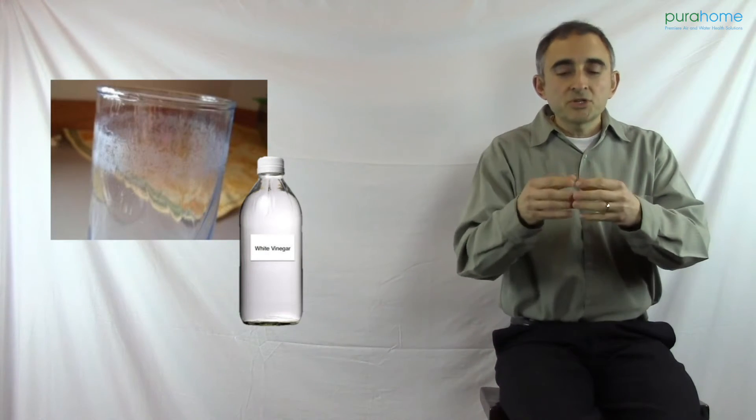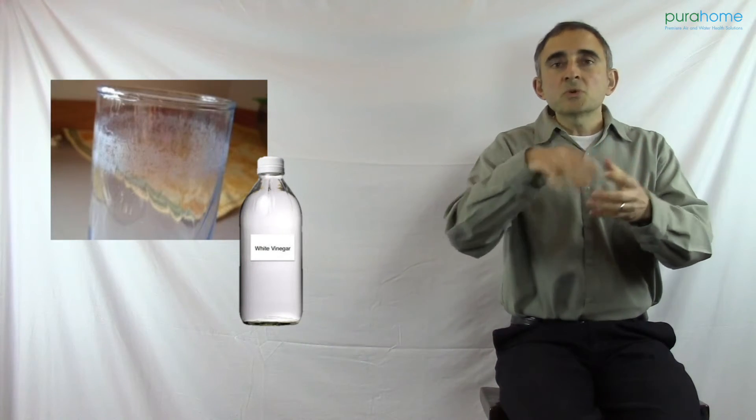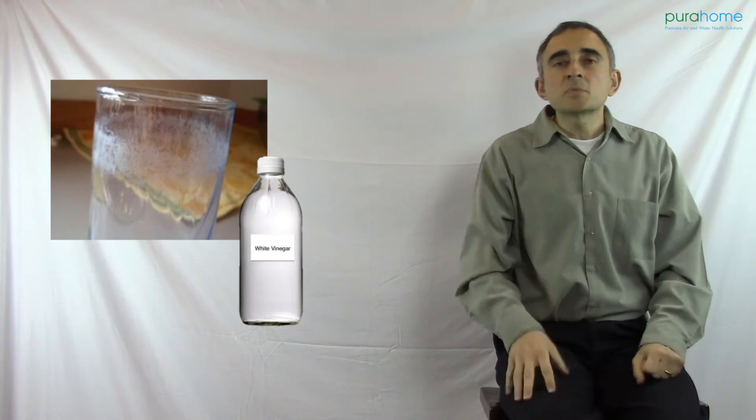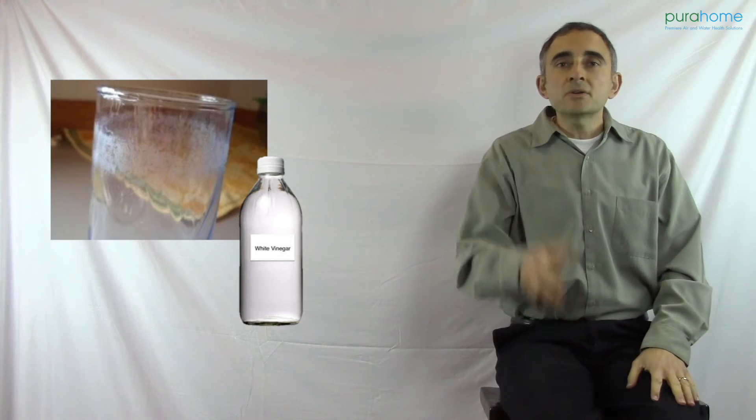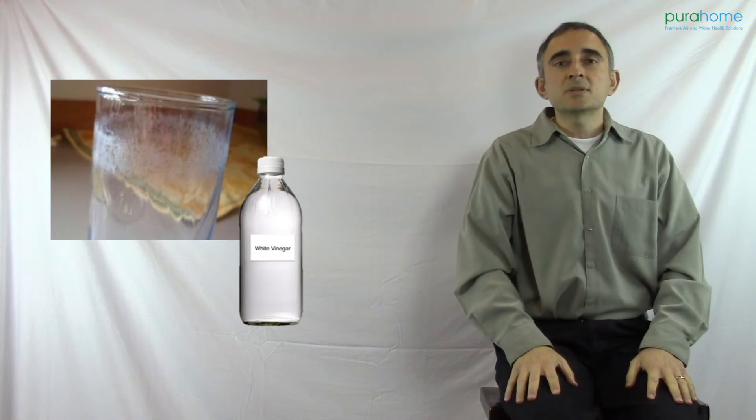Take the filter out of your pitcher, pour in some vinegar, swirl it around, let it soak for a little bit and it should come off easily with a damp rag. Then just rinse it out with water and you're good to go. You have a nice clean pitcher.